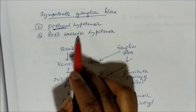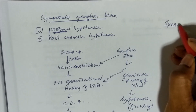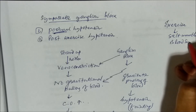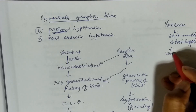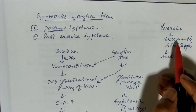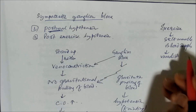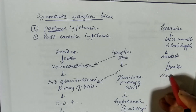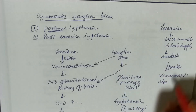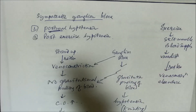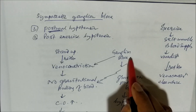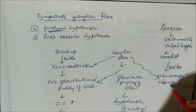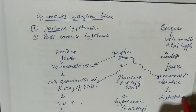Similarly, post-exercise hypotension can be explained. During exercise, skeletal muscles need more blood supply, achieved by vasodilation in those muscles. Reflex venoconstriction occurs elsewhere to redirect more blood to skeletal muscles. When a ganglion blocker is given, this reflex venoconstriction in other places is inhibited, so blood is not redirected properly, leading to hypotension — called post-exercise hypotension.